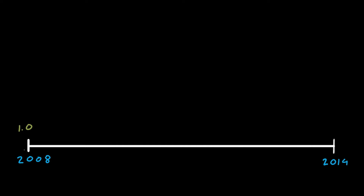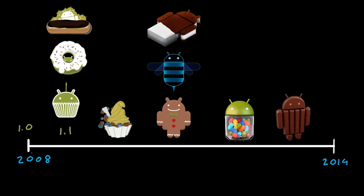Android 1.0 launched in 2008, and in just the six years since then, there have been 11 new major platform releases.